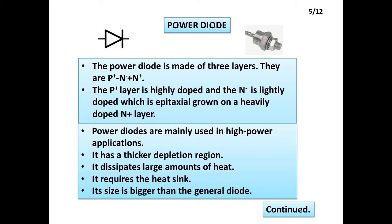Power Diode: The power diode is made of three layers — P-plus, N-minus, and N-plus. The P-plus layer is highly doped and the N-minus is lightly doped, which is epitaxially grown on a heavily doped N-plus layer.